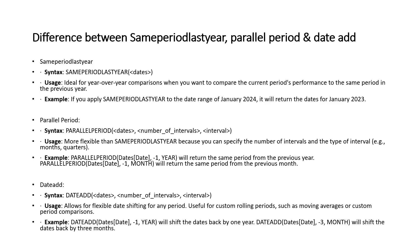The next important question in the second technical round is the difference between SAMEPERIODLASTYEAR, PARALLELPERIOD, and DATEADD — these fall under time intelligence DAX functions. SAMEPERIODLASTYEAR is straightforward: if today is July 2024, it will take you to July 2023 — exactly one year back, same period. It cannot take you to July 2022 or any other period.